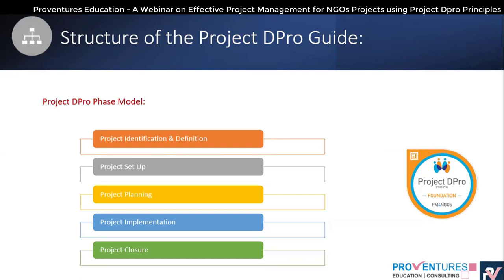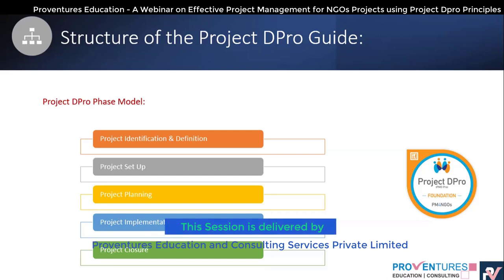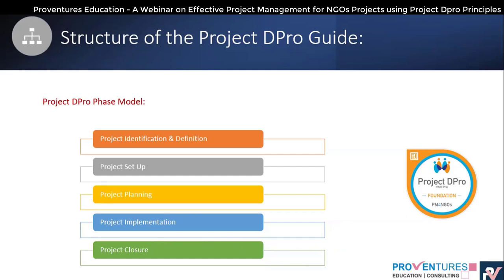The second phase is project setup. Here we define what we are going to achieve, who is involved, and what costs will be incurred. All these things are defined in the project charter, which officially authorizes the start of the project. The project charter is prepared in the project setup phase.